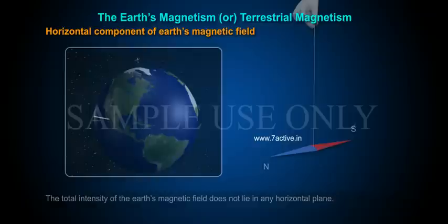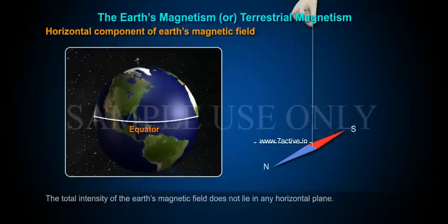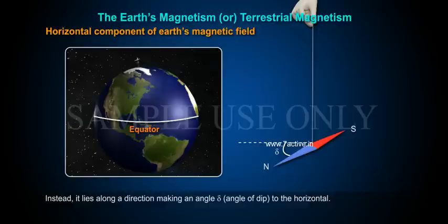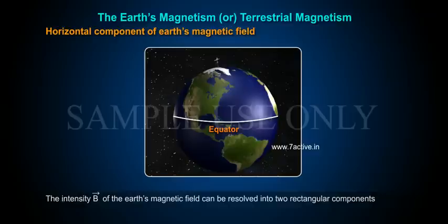Horizontal component of Earth's magnetic field: The total intensity of the Earth's magnetic field does not lie in any horizontal plane. Instead, it lies along a direction making an angle delta (angle of dip) to the horizontal.